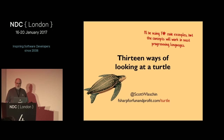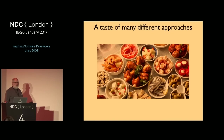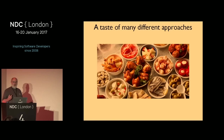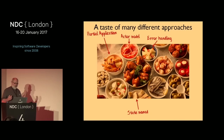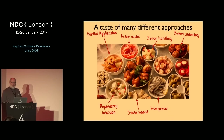This applies especially to functional programming languages like Haskell and Scala. Most talks focus on a particular topic, and I thought: why not take one problem domain and show lots of different ways of solving the same problem with different techniques? It's like a taster menu. I'm going to cover functional programming techniques — partial application, functional error handling, state monad, actor model, event sourcing, dependency injection, interpreter capabilities — 13 different ways in all.